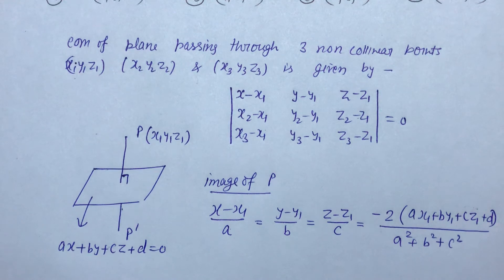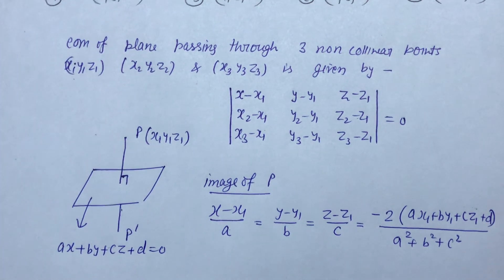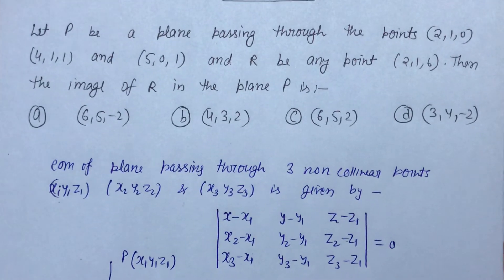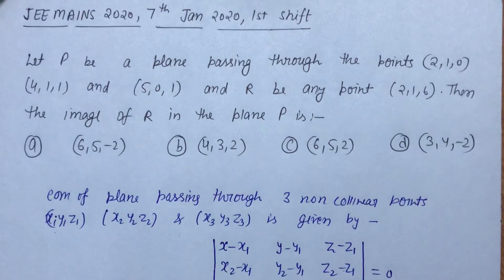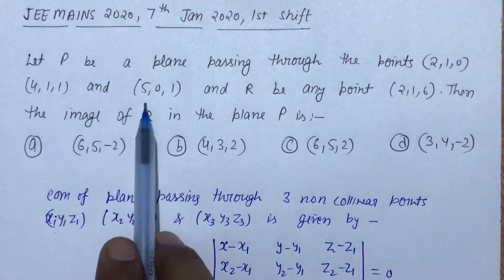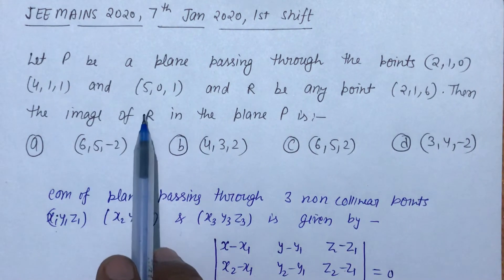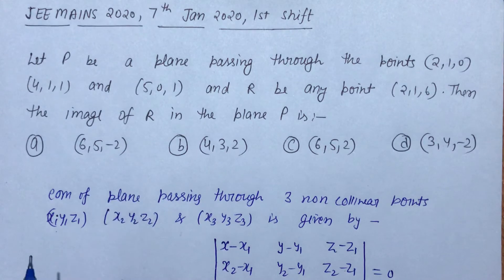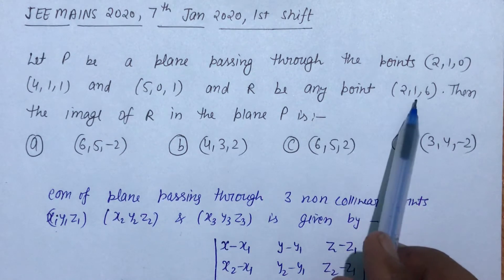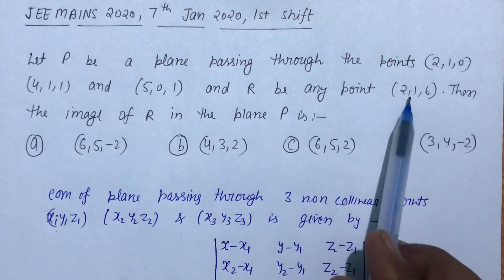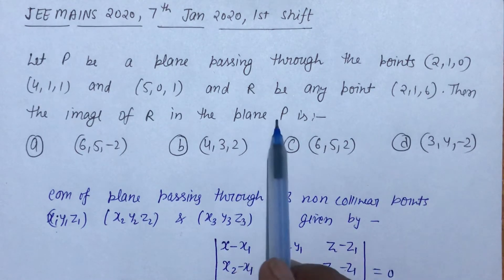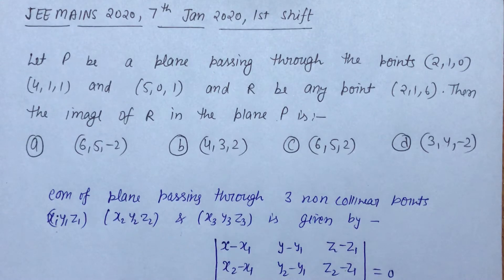So the question involves these two concepts. The problem says P is a plane passing through (2,1,0), (4,1,1), and (5,0,1) — three non-collinear points — so we can obtain the equation of the plane. After that, there is a point R at (2,1,6) and we need to find its image about the plane P. So first of all, let me find the equation of the plane.